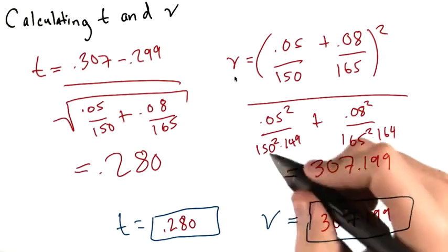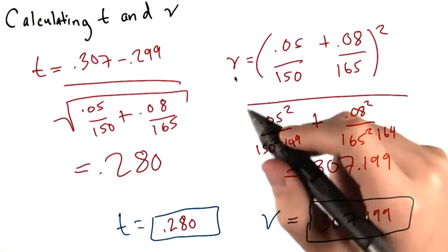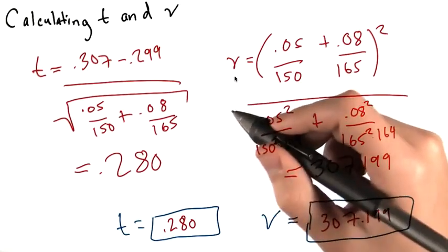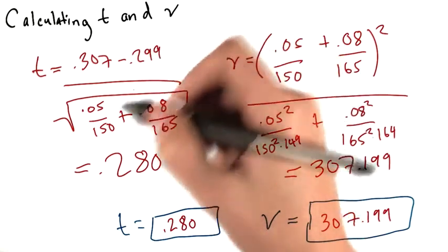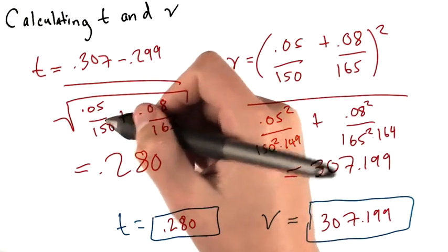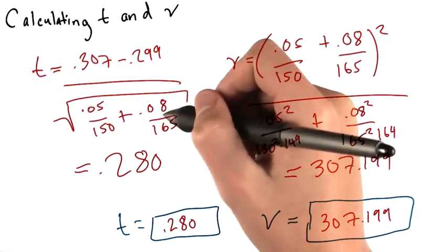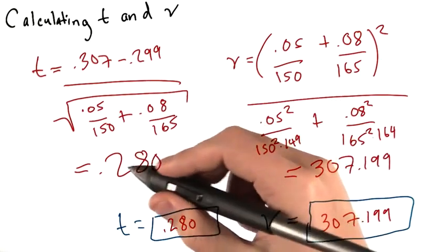We can just plug the information provided into our equations for t and nu. If we look at the equation for t, t is 0.307 minus 0.299 over the square root of 0.05 over 150 plus 0.08 over 165, which is going to be 0.280.